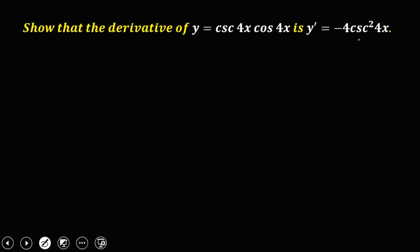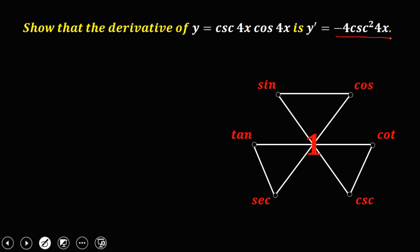The next given: show that the derivative of y equals cosecant 4x times cosine 4x is negative 4 cosecant squared 4x. Using the same figure — the product of two functions equals the middle function.